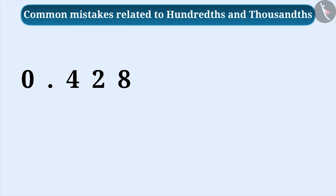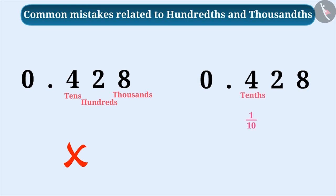For example, in 0.428, they think that there are 4 tenths, 2 hundredths, and 8 thousandths. This is a misunderstanding. The correct understanding is that there are 4 tenths, 2 hundredths, and 8 thousandths.